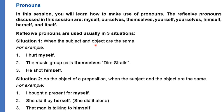Situation one: when the subject and object are the same — 'He shot himself,' where he is the subject and himself is the same person as the object. Situation two: as the object of a preposition when subject and object are the same — 'I bought a present for myself,' 'She did it by herself,' 'That man is talking to himself.' In each case, the subject and reflexive pronoun refer to the same person.